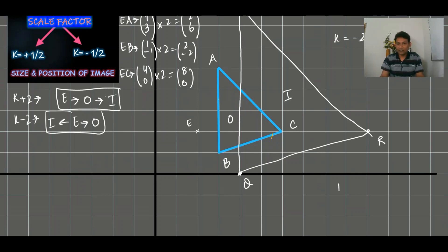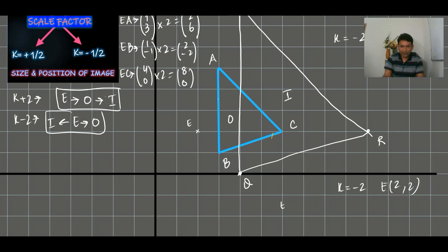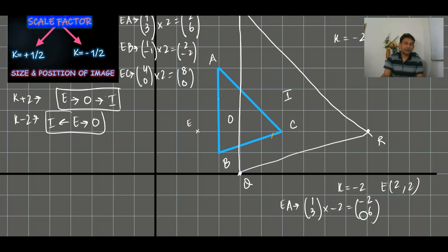K is minus two, center is (2, 2). The column vector from E to A is (1, 3). Multiplying (1, 3) by minus two gives (-2, -6). So from the center, the image of A is at position (-2, -6) relative to the center.